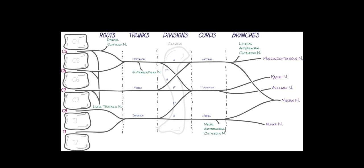It is not always easy to distinguish radiculopathies from plexopathies. Occasionally, knowing that the dorsal scapular nerve comes off at the root level (C5) and the long thoracic nerve comes off at the root level (C5, C6, and a little C7) can help. If we have scapular winging or weakness of the rhomboids muscle, then the lesion has to be proximal — at or above the roots.